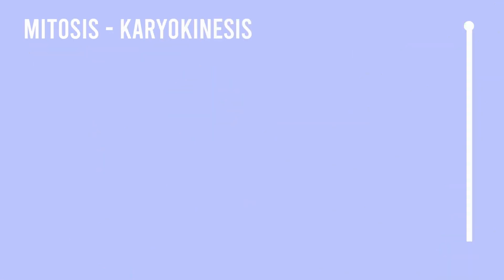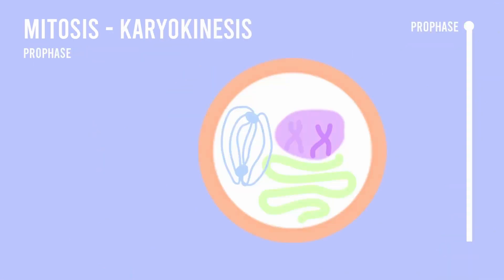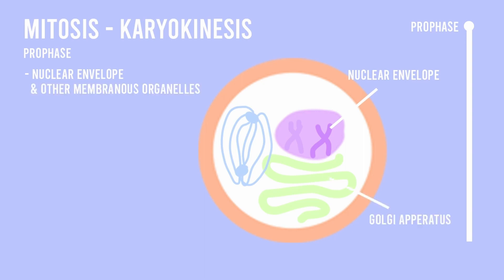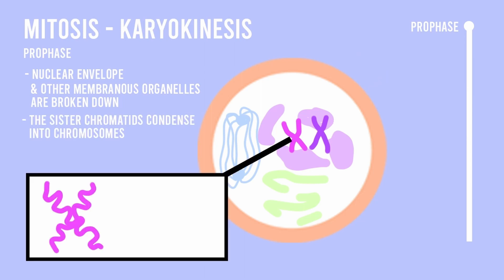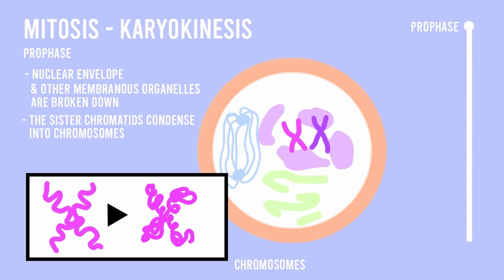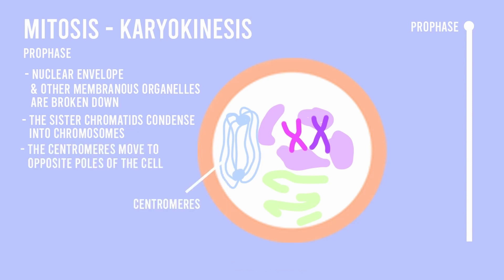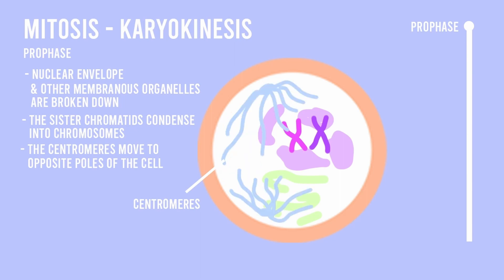The first and longest step of karyokinesis is known as the prophase. During the prophase, the nuclear envelope, or the membrane of the nucleus, and other membranous organelles such as the Golgi apparatus, are broken down. Furthermore, the sister chromatids condense and coil into denser structures known as chromosomes, which become fully visible under a microscope. The centrosomes also move to opposite poles of the cell, forming a microtubule structure known as the mitotic spindle.